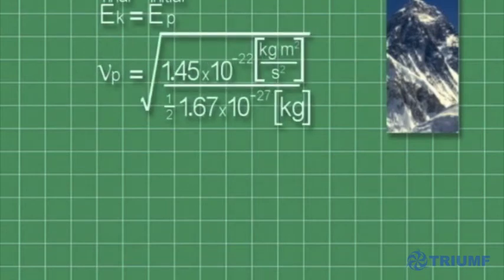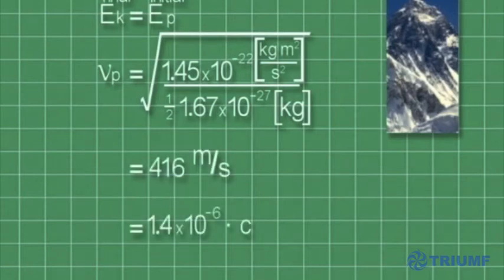The proton's velocity when it hits the ground is approximately 416 meters per second, or about one millionth the speed of light.